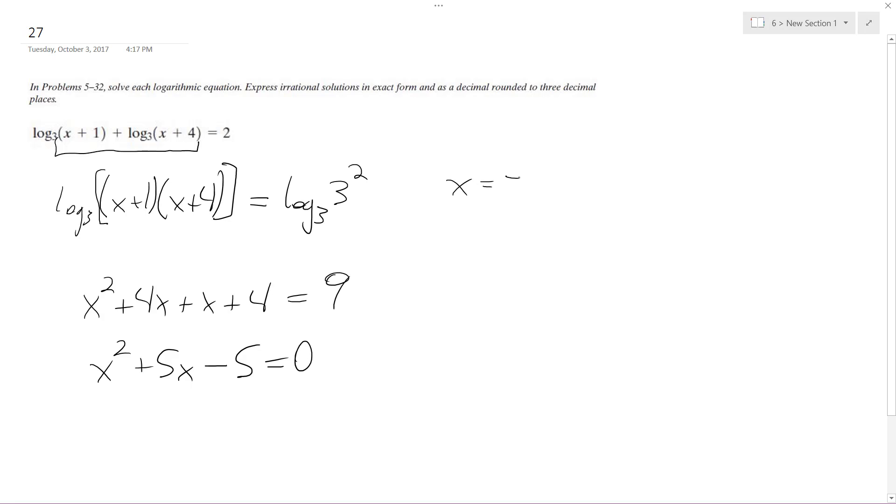Quadratic formula is this - I can't tell you how many times I've written this, but it's good to see it again. So we get x equals negative 5 plus or minus square root of 5 squared minus 4 times 1 times negative 5.